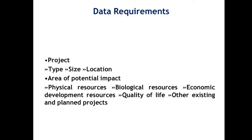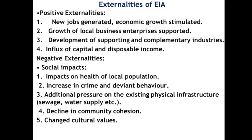What are the data requirements for the EIA process? First, data required in the form of the project: which type of project, what is the size of the project, and what is the location of the project. Next, what is the area of potential impact — where will impact occur? Physical resources, biological resources, economic development resources, quality of life, and other existing and planned projects.